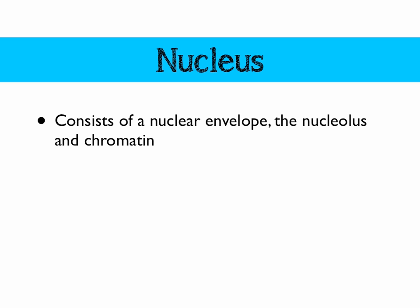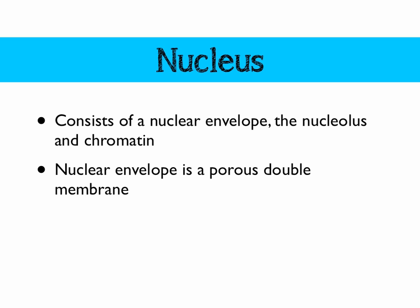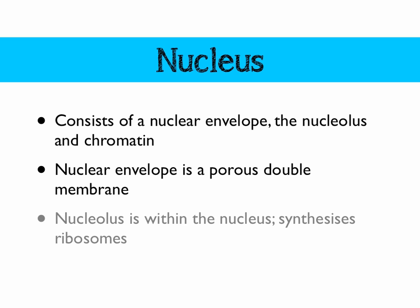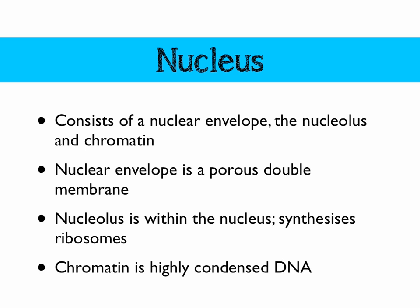Let's start with the nucleus. This consists of a nuclear envelope, the nucleolus, and chromatin. The nuclear envelope is a porous double membrane around the outside that allows stuff to get in and out. The nucleolus is within the nucleus, and its function is to synthesise ribosomes — to build ribosomes. Finally, we've got the chromatin, which is highly condensed, packaged DNA wrapped around structures called histones, making it much more condensed. We can see chromatin in the form of chromosomes at certain points during the cell cycle.